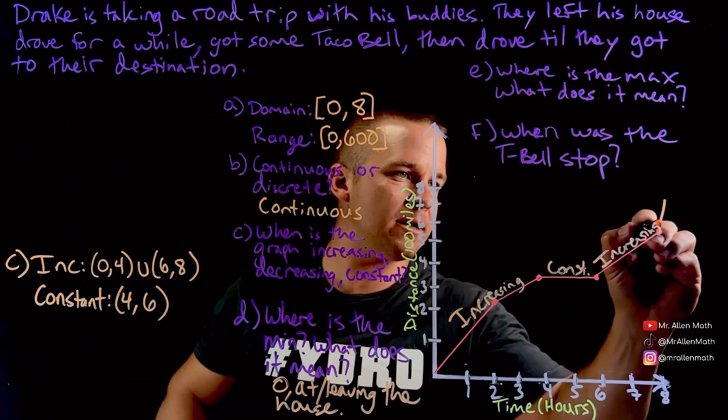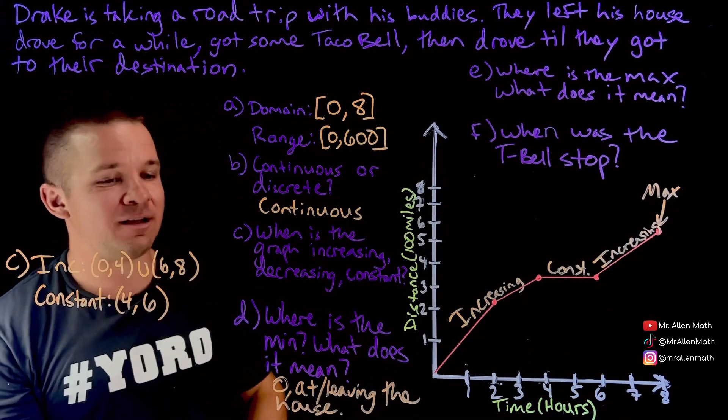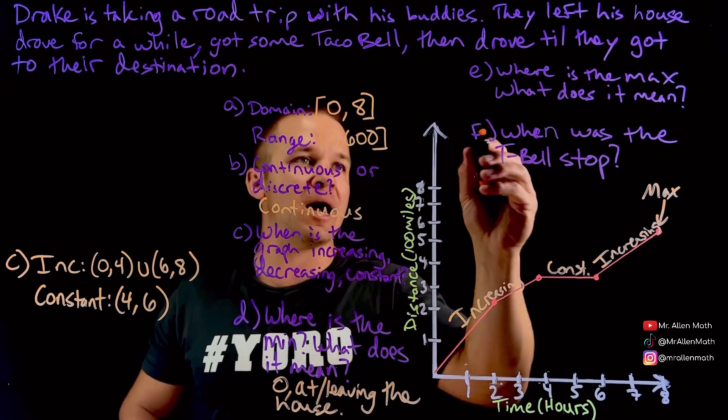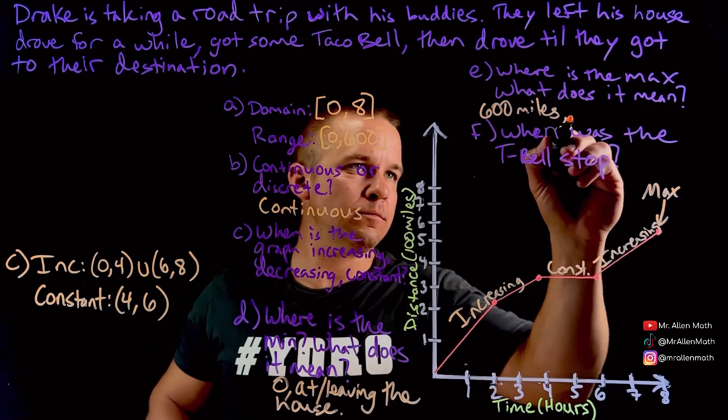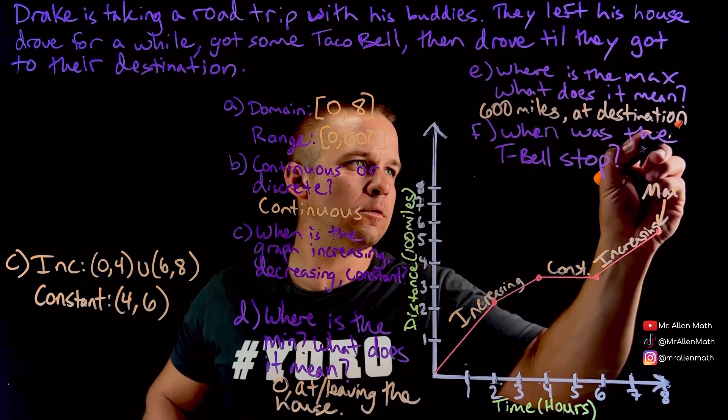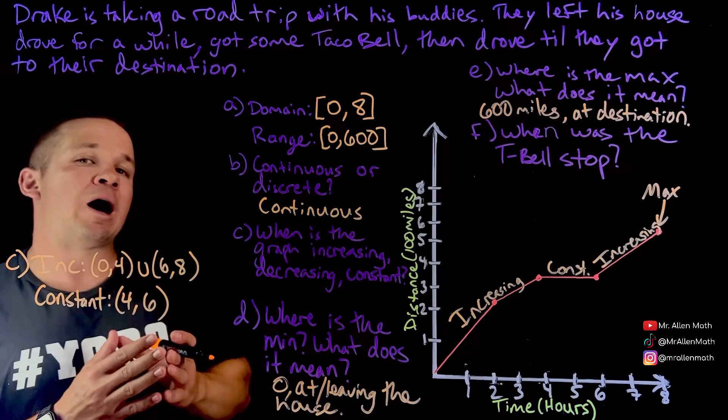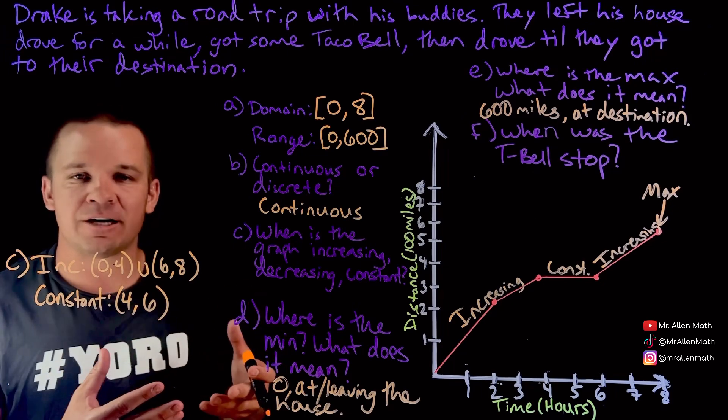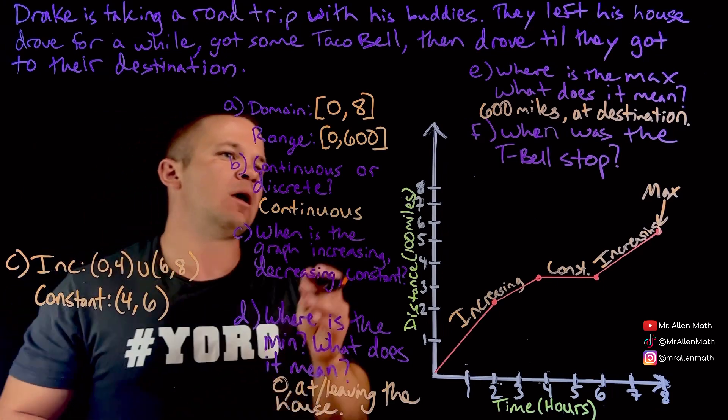And then where is the max and what does it mean? Well, this right here would be my max. And what does that mean? They got to their destination, didn't they? Okay. So max would be right here. That's at six hours. Sorry, 600 miles. 600 miles. And that would be at destination. Cool. So usually for our max and min values, we're talking about the Y value for that. If it asks for a maximum, like the point that that occurs, then you'd use an ordered pair. But because we're saying like, what is it? We're using the Y value there.